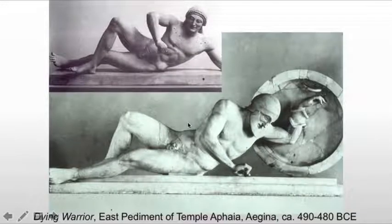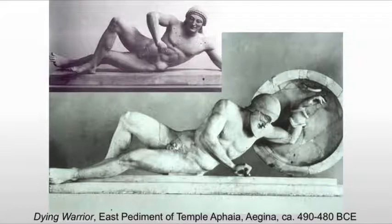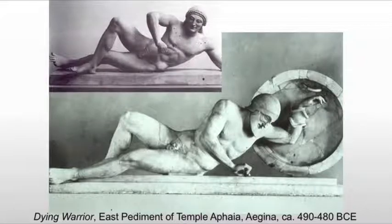Then we move to the east pediment, built 10 years later around 480 BCE. We see a massive difference, because again we have a dying warrior. The one at the top is the older Archaic dying warrior from the west side; the one below is the newer warrior from the east side. The comparison really highlights the stylistic changes. Suddenly, instead of sorry-for-bleeding-on-your-carpet cheerfulness, we have the east pediment warrior who is completely ignoring us.